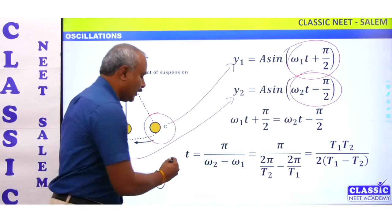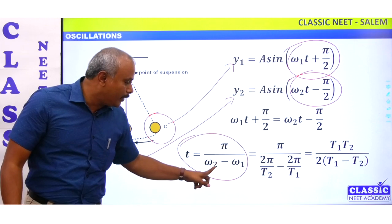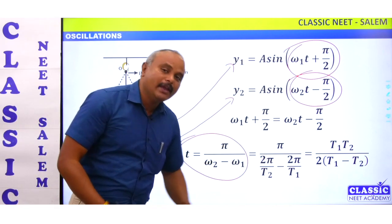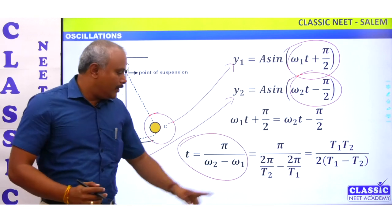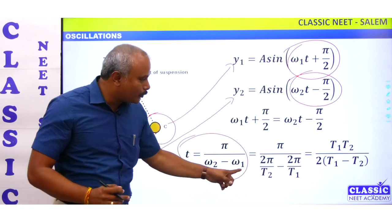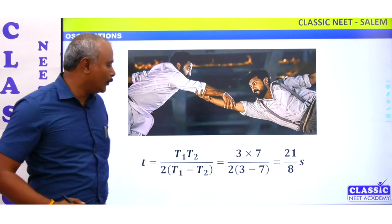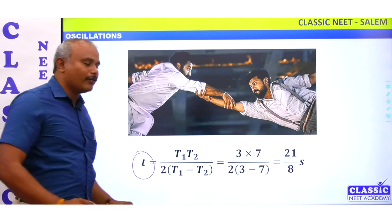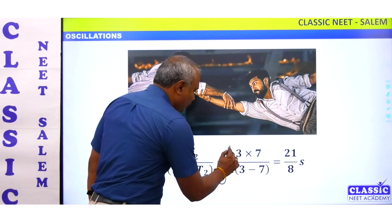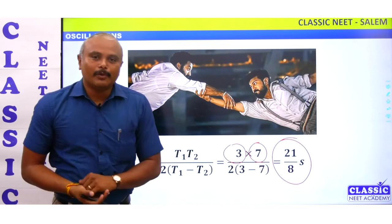Substituting, we get: t = π / (ω₂ − ω₁). Since ω = 2π/T, we substitute and get t = T₁T₂ / (2 × |T₁ − T₂|). Substituting T₁ = 3 and T₂ = 7, the answer is 21/8 seconds.